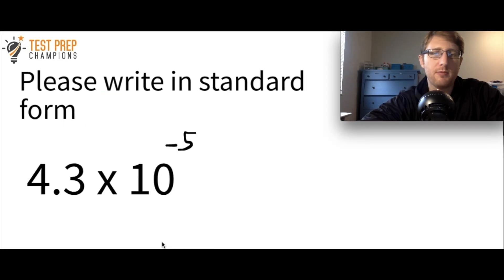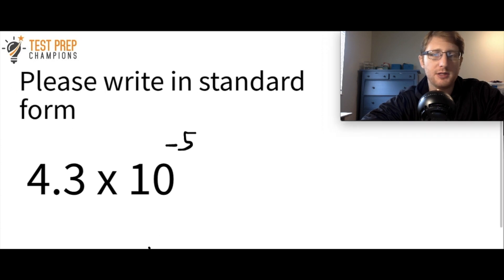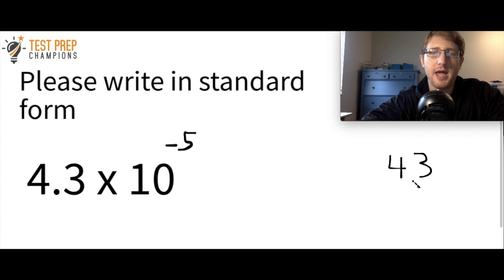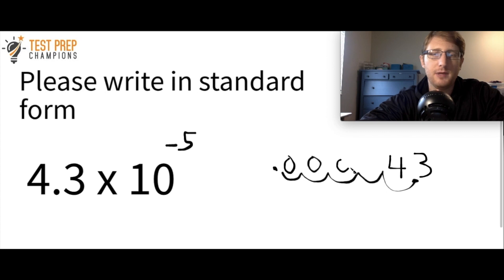Now let's go the other way: 4.3 times 10 to the negative five — write this in standard form. Start by writing my 4 and 3. The negative tells me I'm going to take my decimal and move it to the left. I move it five places to the left — one, two, three, four, five — and my decimal ends up here. Filling in the zeros, the answer is 0.000043.